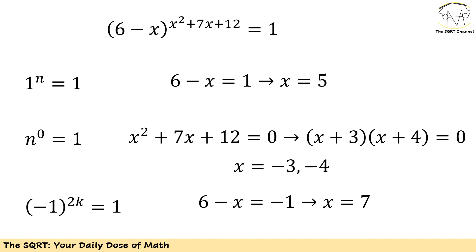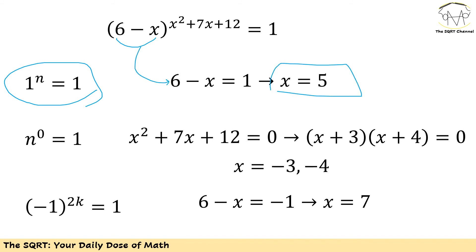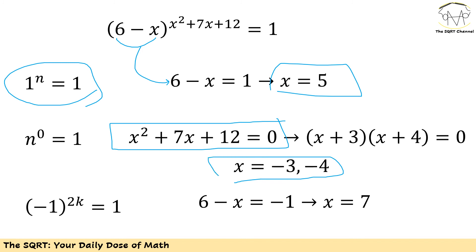For the first case, the base 6 minus x equals 1, so x equals 5. For the second case, the exponent equals 0, so x squared plus 7x plus 12 equals 0, giving x equals negative 3 and negative 4. Finally, the base can be negative 1: 6 minus x equals negative 1, so x equals 7, but we need to verify that the exponent is an even number.